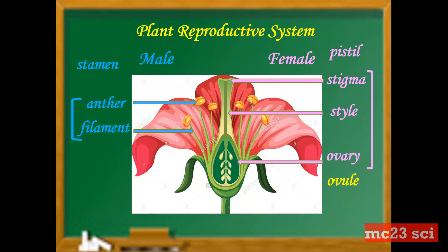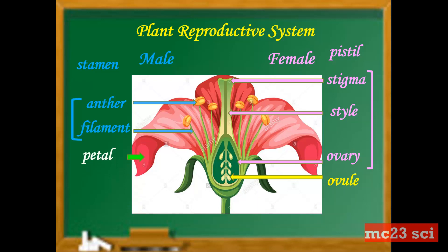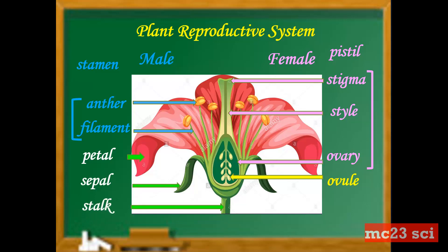In the ovary, there is an ovule. And there are accessory parts: the petal, the sepal, the stalk, and the receptacles.